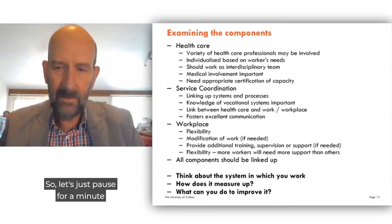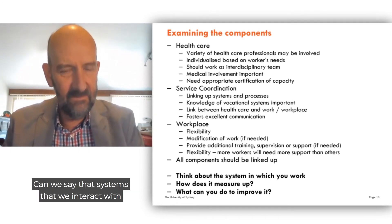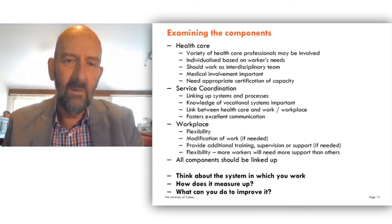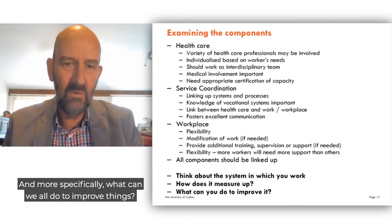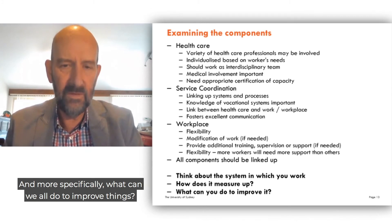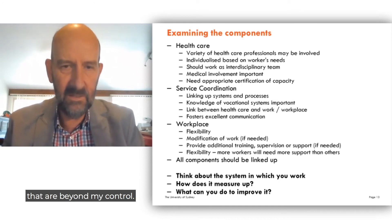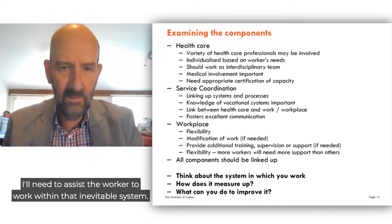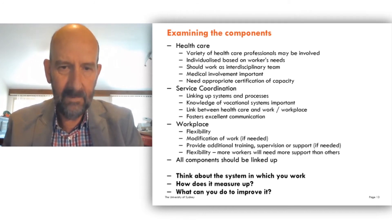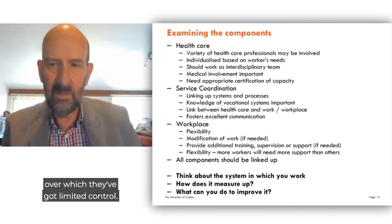Let's pause and reflect on the system in which we all work. Can we say that systems we interact with will support effective vocational rehabilitation as identified in this review? What can we all do to improve things? There are some things I can change, but there are some things — particularly system factors — that are beyond my control. Where those crop up as an issue, I'll need to assist the worker to work within that inevitable system. Plenty of workers comment that they feel trapped in a system over which they have limited control.